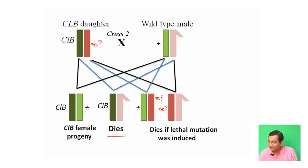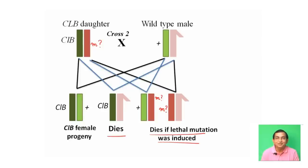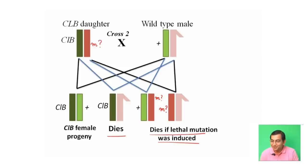The inference is that if X-rays induced mutation, all males would die — CLB males die, and if X-ray induced mutation then normal wild-type males also die. As a result, all females survive. From this experiment, H.G. Muller first showed that X-rays produce mutations, making this one of the most important classical experiments to detect mutation.